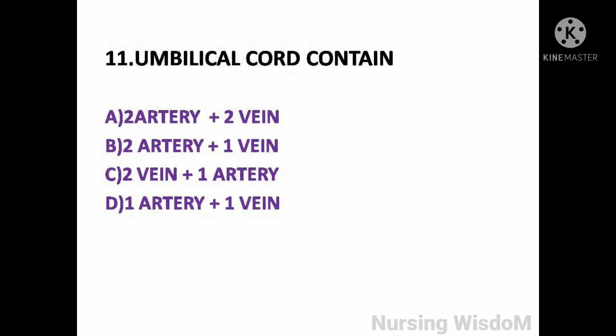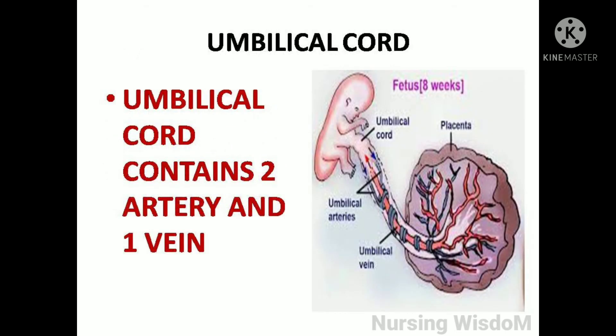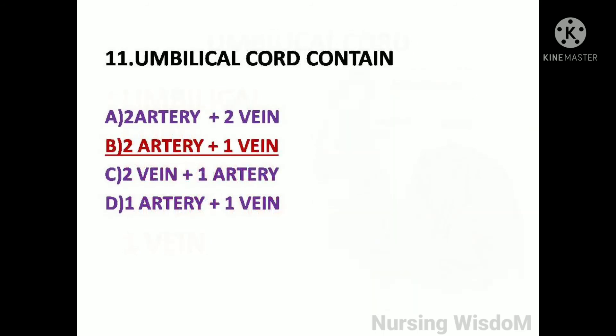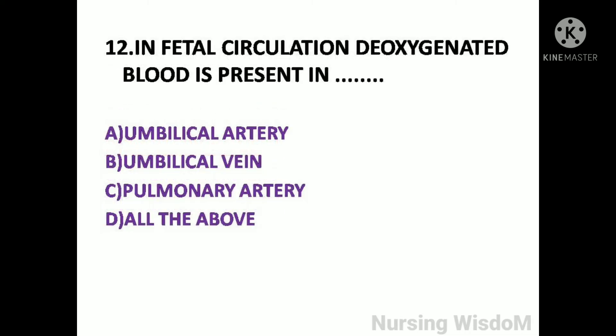Next question: The umbilical cord contains — option A: two arteries plus two veins; option B: two arteries plus one vein; option C: two veins plus one artery; option D: one artery plus one vein. The umbilical cord contains two arteries and one vein. So here the answer is option B, two arteries plus one vein.